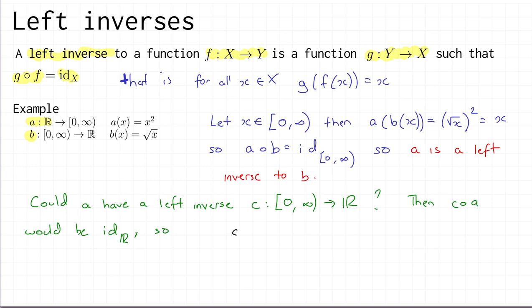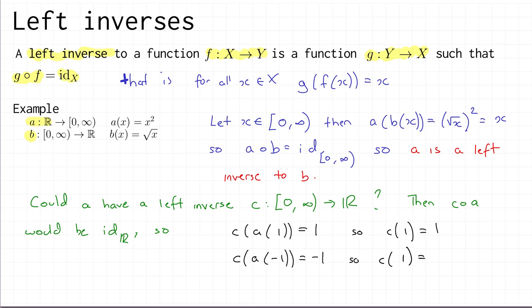For example, c composed with a being the identity means c composed with a of 1 must equal 1. Well, a of 1 is 1 squared, which is 1, so we get c of 1 equals 1. Now look at minus 1: c of a of minus 1 must equal minus 1, since c composed with a is supposed to be the identity on the real numbers. But a of minus 1 is minus 1 all squared, which is 1. So we'd need c of 1 equals 1 and c of 1 equals minus 1 — that's a contradiction.